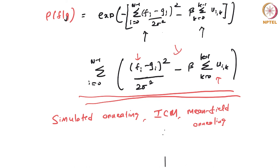We figured out a data fidelity term — the likelihood — modeled as Gaussian, which is the same as modeling the noise as Gaussian. We then imposed a prior, which acts as regularization. People work on what kind of prior leads to a certain type of image. You choose a prior, write down P(F|G), maximize this probability for a certain image F, and end up with this optimization problem.